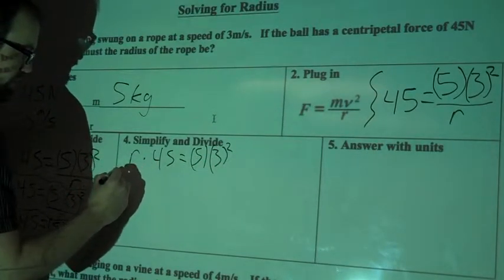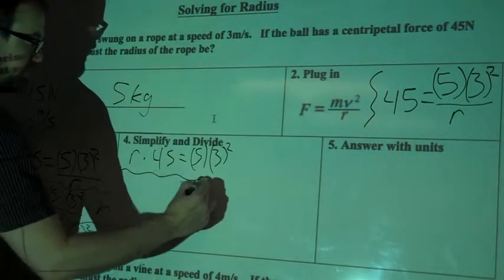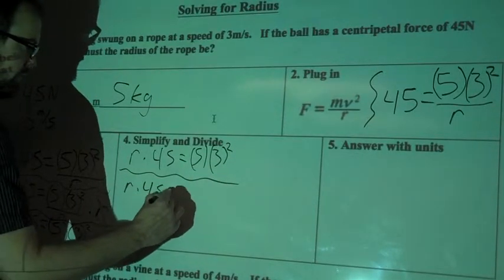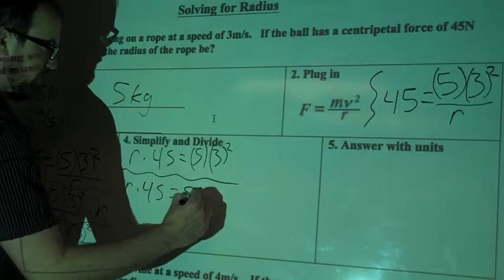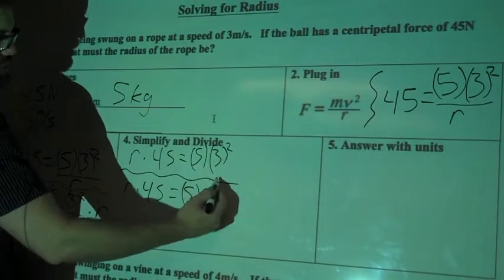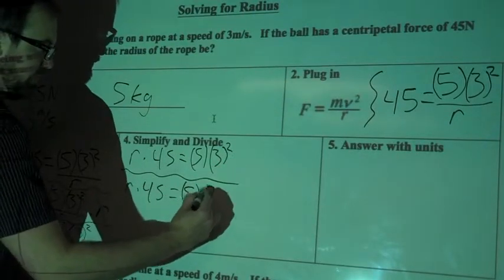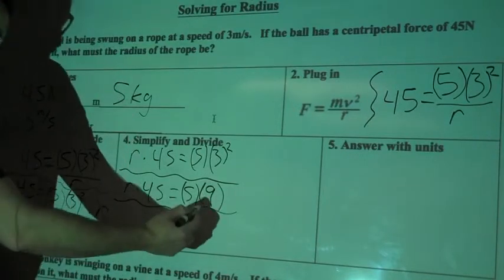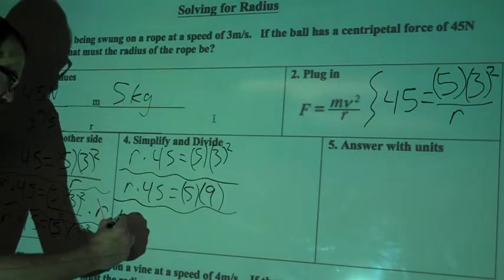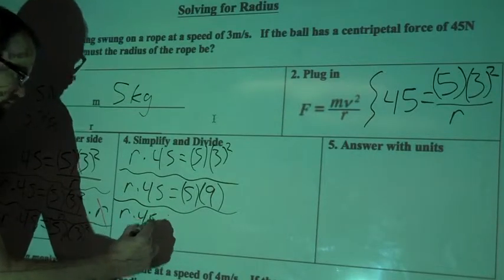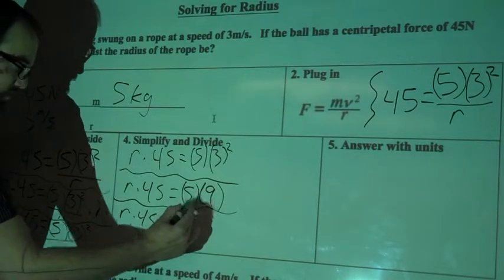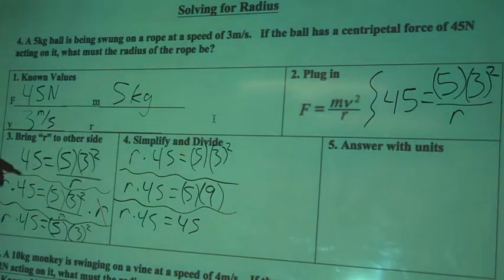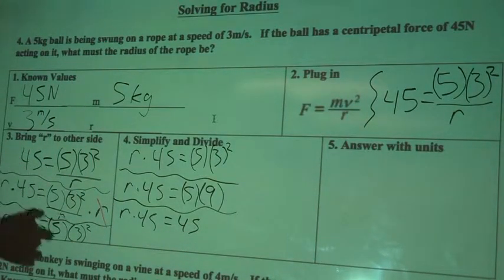So I'll rewrite everything on this side of the equation, and I'm just going to use squiggly lines here to separate out each different step. So R times 45 equals 5, and then 3 squared is 3 times 3, so 5 times 9. And then I'll simplify this over here. So R times 45 equals 5 times 9, which is actually 45. This doesn't look bad at all.